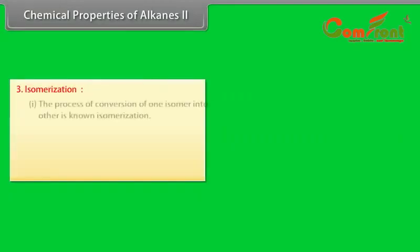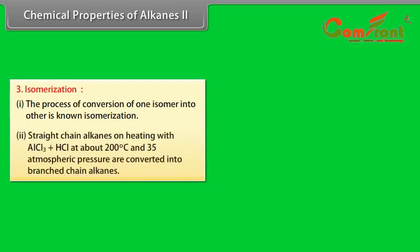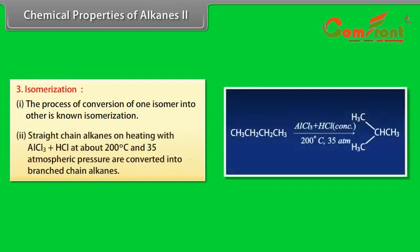Isomerization: 1. The process of conversion of one isomer into another is known as isomerization. 2. Straight chain alkanes heated with AlCl3 + HCl at about 200°C and 35 atmospheric pressure are converted into branched chain alkanes.